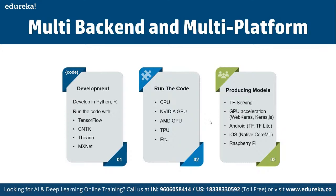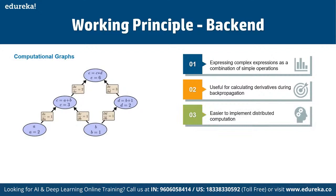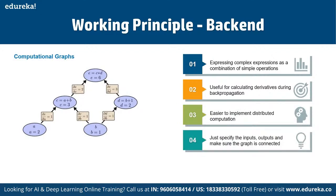Now let's talk about the working principle of Keras and how exactly it is structured. It works on the same computation graphs where we can express complex expressions as a combination of symbolic operations. This is useful for calculating derivatives using backpropagation, easier to implement distributed computation, and we just need to specify the inputs, outputs, and make sure the graph is connected. Essentially it works on the deep learning model using the same artificial neural network — the perceptron — the same concept as neurons in the human brain.